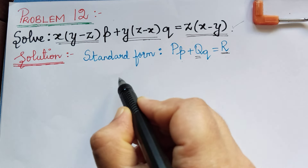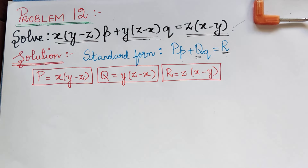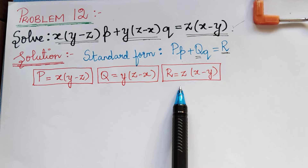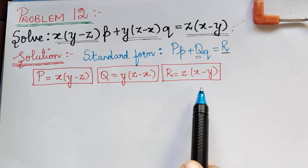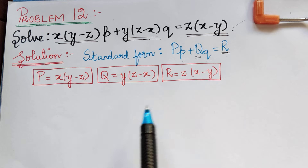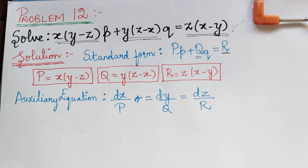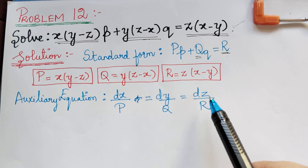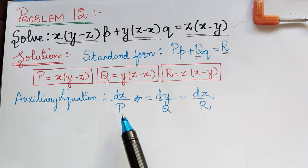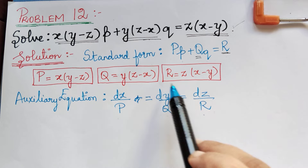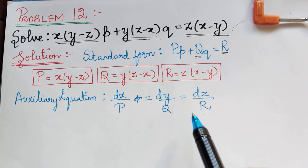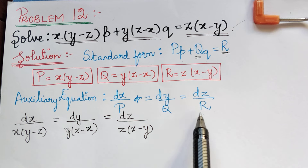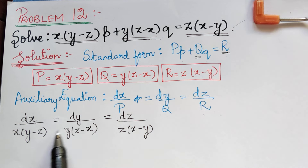After writing the values of P, Q, and R, we have to write the auxiliary equation. The auxiliary equation is given by dx/P = dy/Q = dz/R. Now we shall substitute the values of P, Q, and R into the auxiliary equation to get the substituted form.